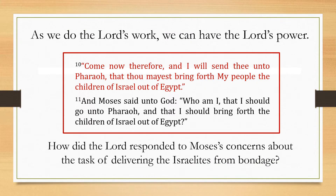As we do the Lord's work, we can have the Lord's power. We can read this in Exodus 3, verses 10 and 11: 'Come now therefore, and I will send thee unto Pharaoh, that thou mayest bring forth my people the children of Israel out of Egypt.' And Moses said unto God, 'Who am I, that I should go unto Pharaoh, and that I should bring forth the children of Israel out of Egypt?' So how did the Lord respond to Moses' concerns about the task of delivering the Israelites from bondage?